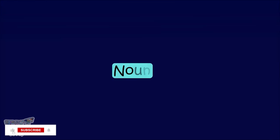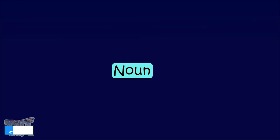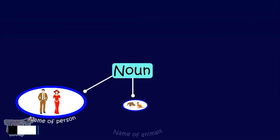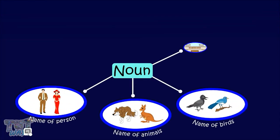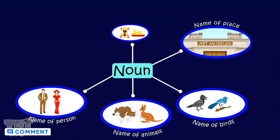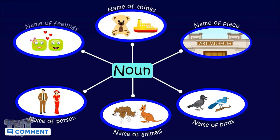We know that a noun is a naming word, and all naming words — that is, names of persons, animals, birds, places, things, even feelings or ideas — are called nouns.